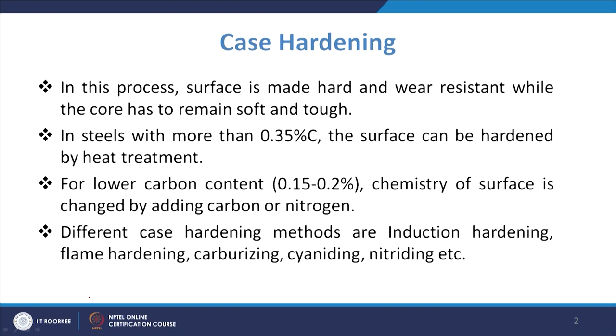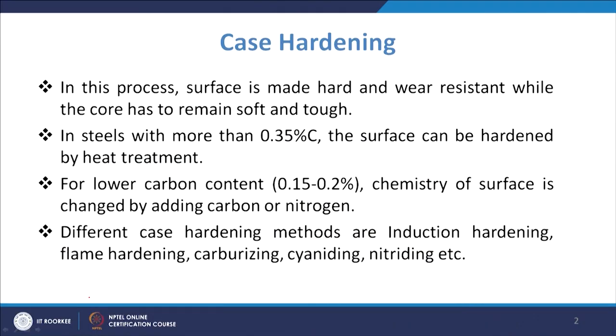We have two categories of steels. When you have a steel with more than 0.35% carbon, the surface can be hardened by heat treatment. As the carbon percentage increases, steel becomes more hardenable. By quenching, you can have the formation of martensite, and the hardness of martensite is a function of carbon content.